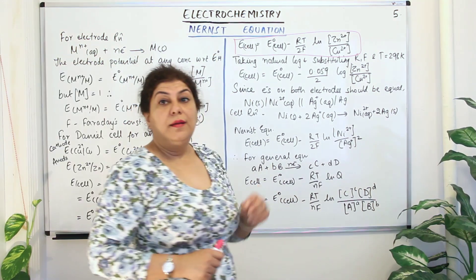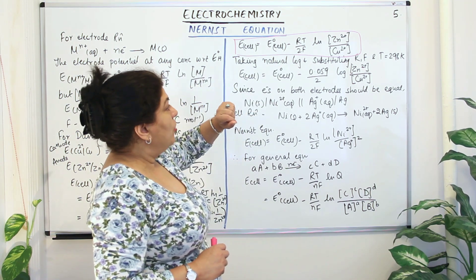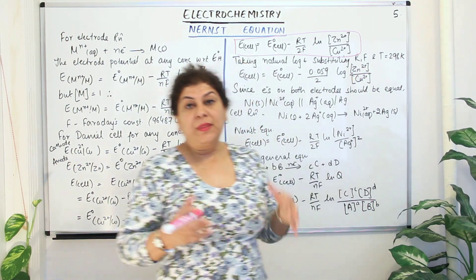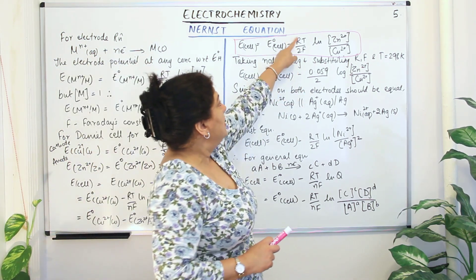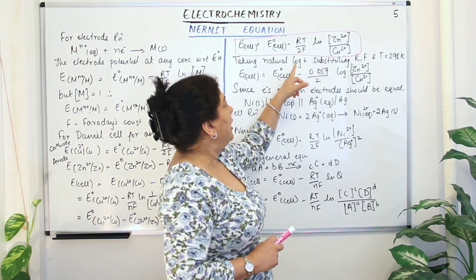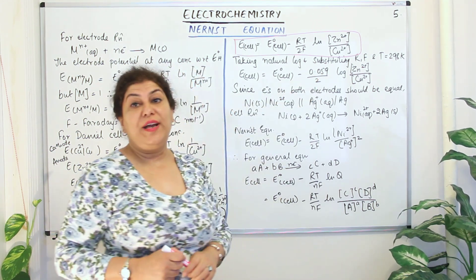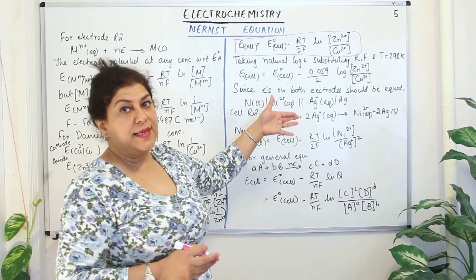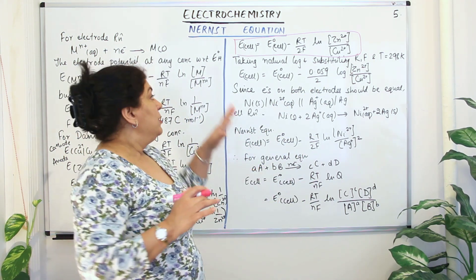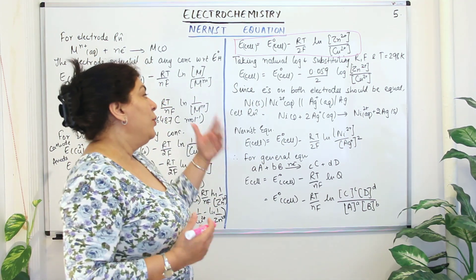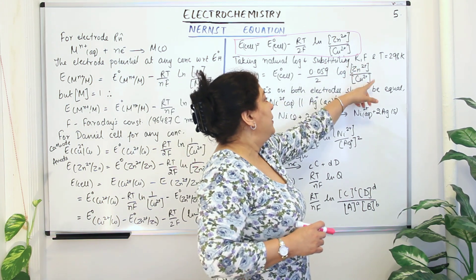This is the Nernst equation for a cell whose concentrations are not one mole per liter. Now if we take log to the base 10 and substitute the values of the constants — R the gas constant, F the Faraday's constant — and take the temperature to be 298 Kelvin, we get E cell equals E⁰ cell minus 0.059 divided by N log([Zn²⁺]/[Cu²⁺]). We keep N general since it changes with different equations, giving the generalized Nernst equation.